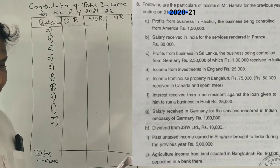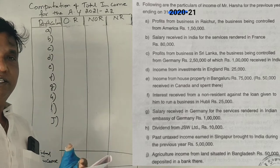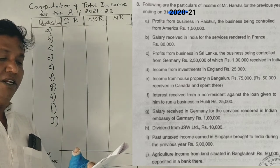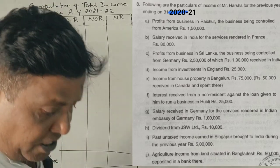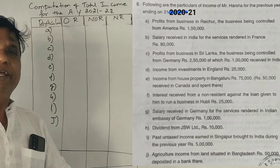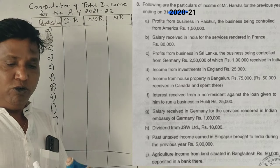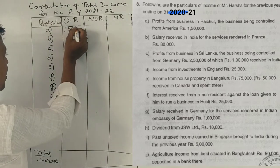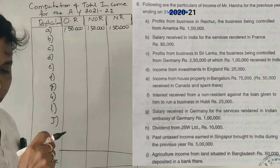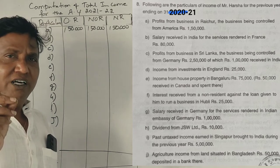Students, here is a question. The following are the particulars of income of Mr. Harsha for the previous year 2020-21. First point: profits from business in Raichur, the business being controlled in America. Second point: profits from business in India in Karnataka. Third point: income from business earned in India in Karnataka.